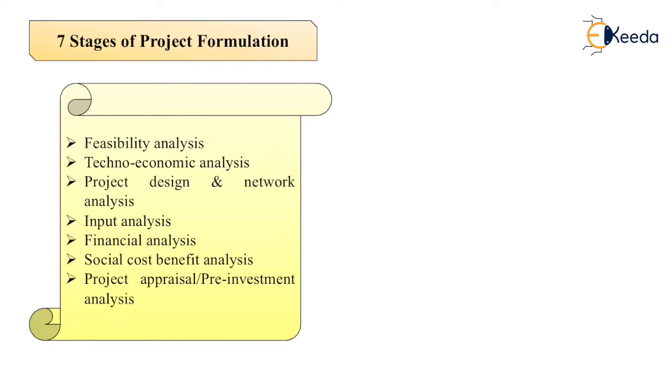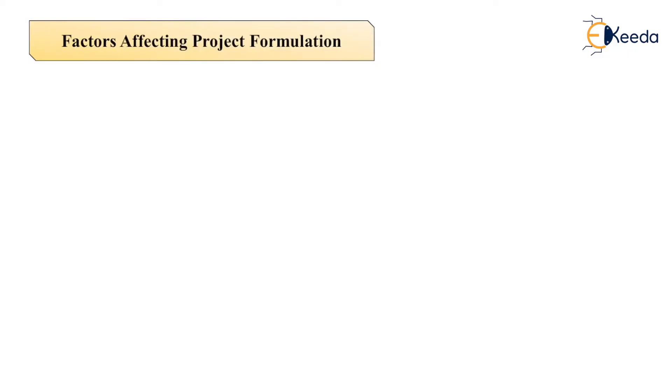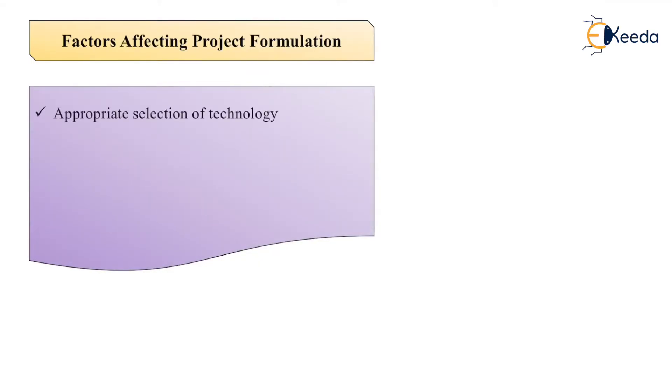Now what are the different factors which affect the project formulation? First factor is appropriate selection of technology. We have to select the appropriate technology because we have numerous technologies which are performing the same tasks or giving the same benefits, but we have to choose the appropriate technology. Then influence of external economics, qualified personnel, resource mobilization, knowledge about government regulation - this is very important, otherwise the project will go in loss - and some other factors related to nature or related to the society.